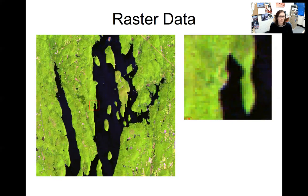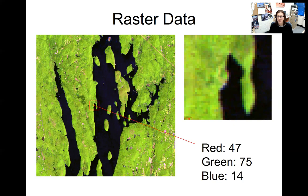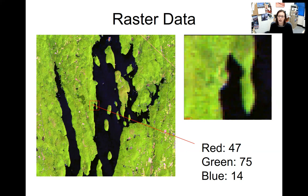Here's that same image of Quabbin Reservoir in false color — we'll talk about remote sensing next week. In this case, dealing with color, if you clicked on one of these pixels, you wouldn't just get a single value. Instead you would get three values representing your red band, green band, and blue band. If you click on a pixel that looks relatively green, your green band will have a higher value than red and blue. Even with three bands creating color, you're still just dealing with numbers.